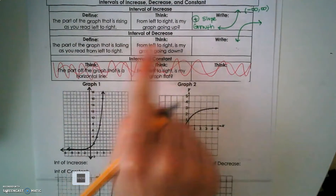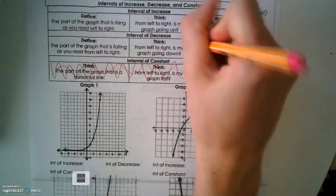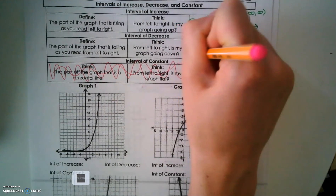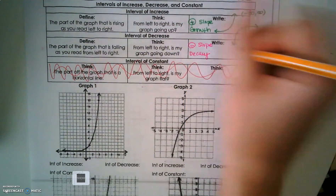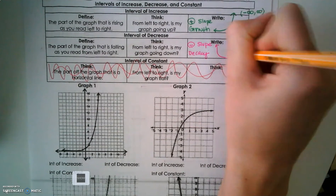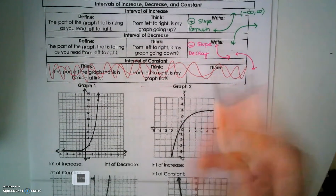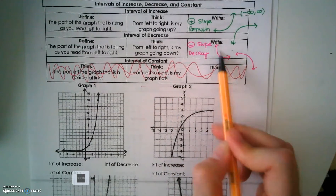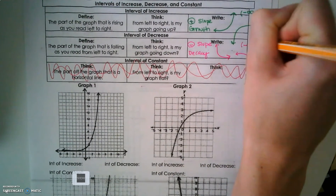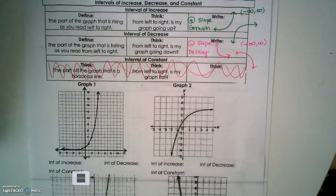For a decreasing function, you're still looking for a negative slope — that means you're looking at a decay function, which means something's falling down, or it's been reflected. From left to right, the graph is going down across the entire domain. So basically, you're just trying to determine: is this function increasing or is this function decreasing?